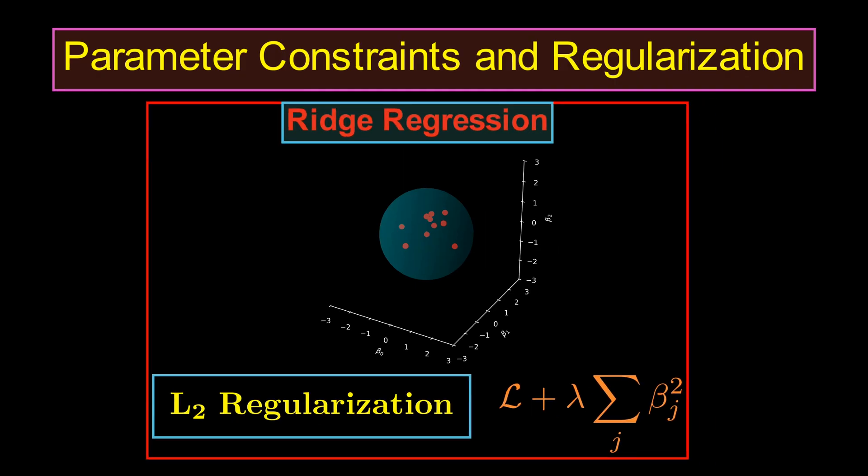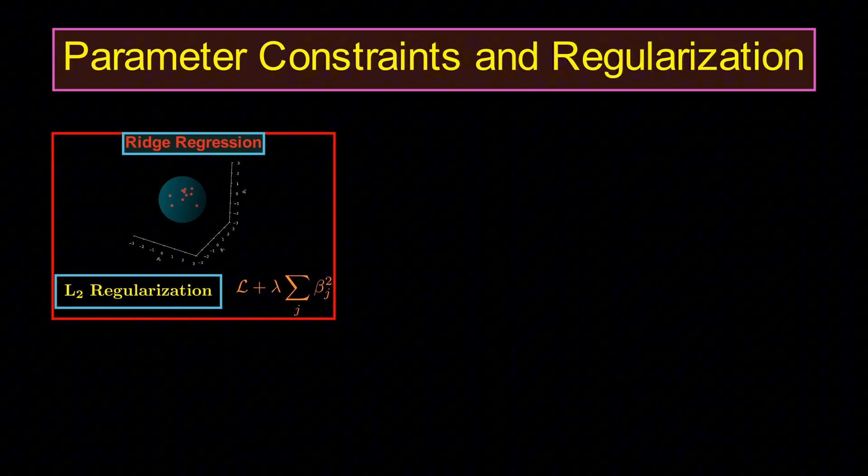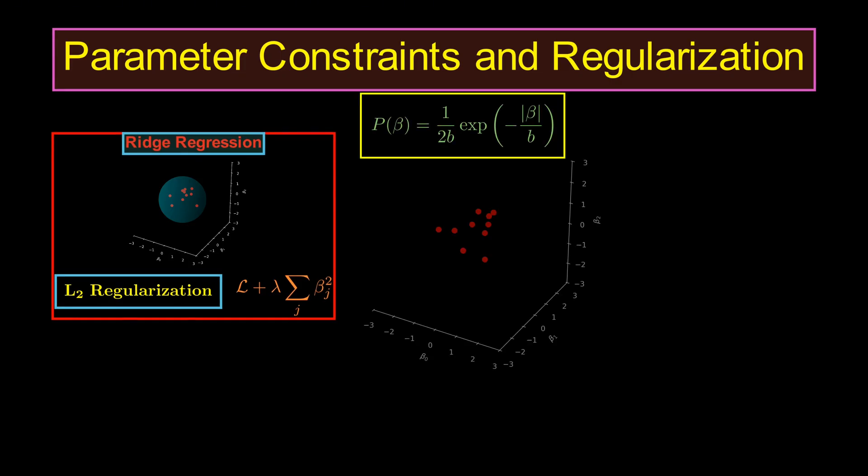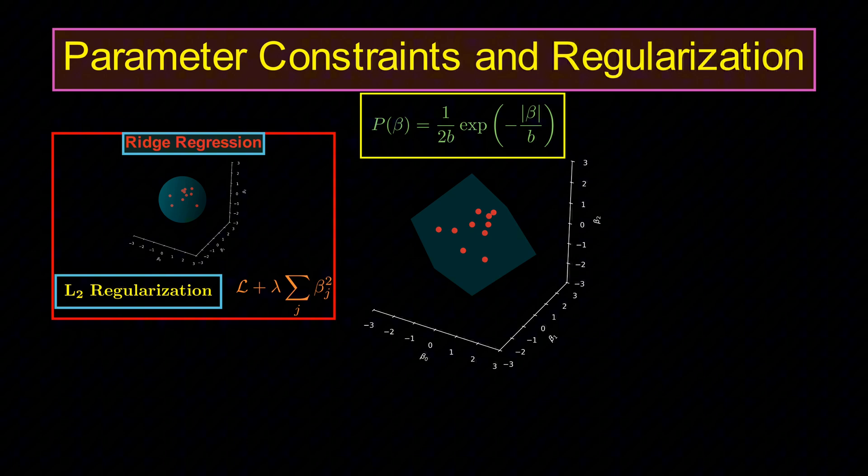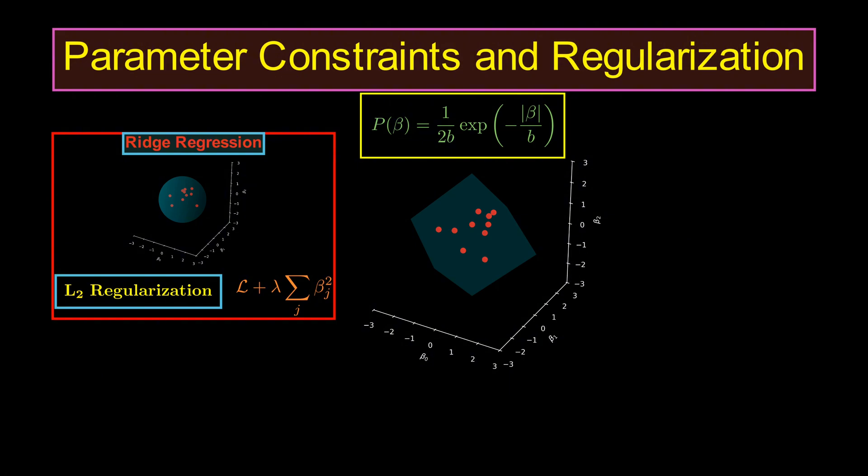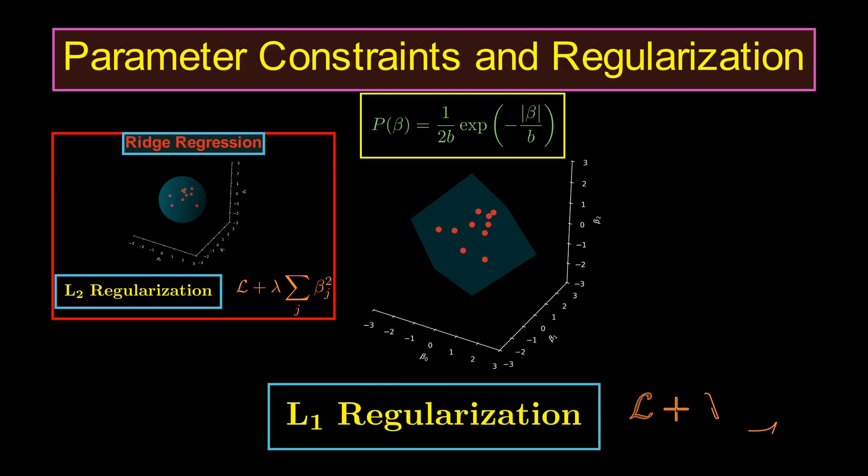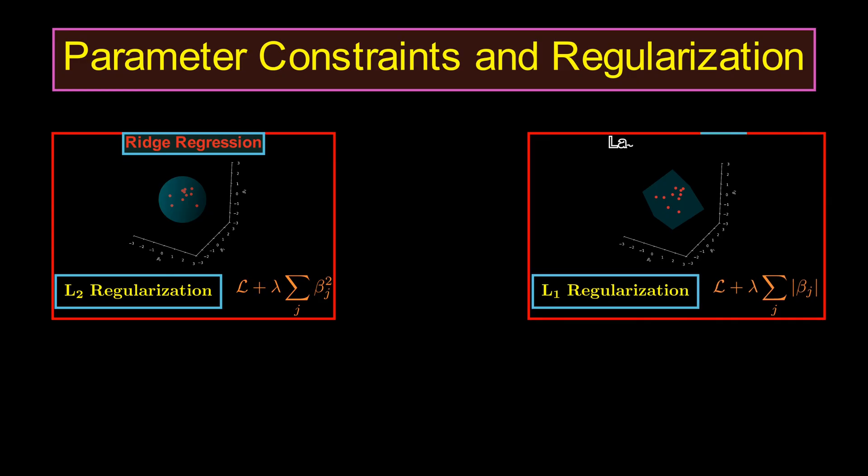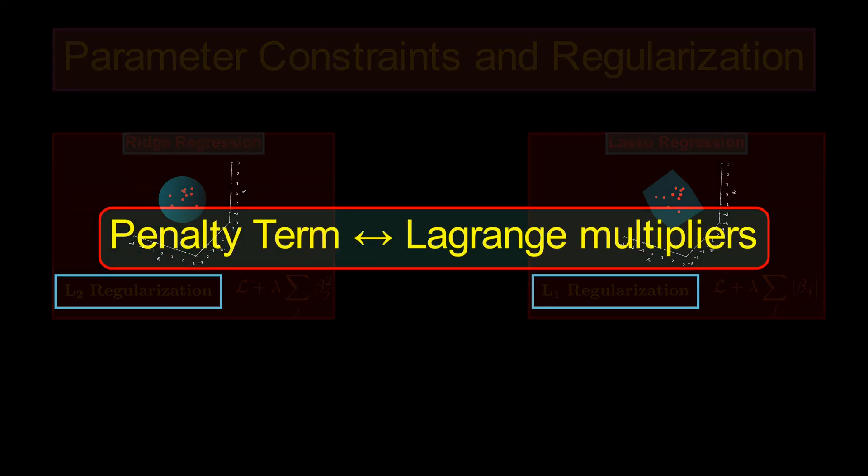On the other hand, when the probability of the parameters is assumed to be Laplace, parameters are constrained to a plane or diamond-like region in parameter space. In machine learning, this is referred to as the L1 regularization. When this constraint is added to a linear regression, we refer to it as the lasso regression. So, the penalty term in machine learning is nothing exotic. It's the Lagrange multiplier we already know from physics.